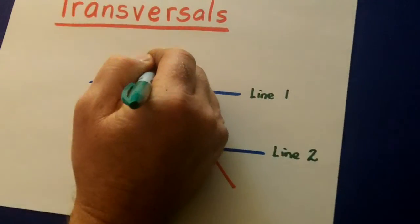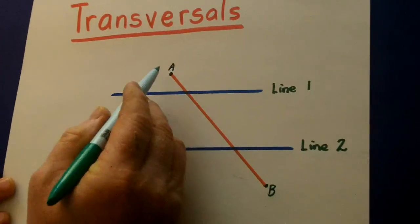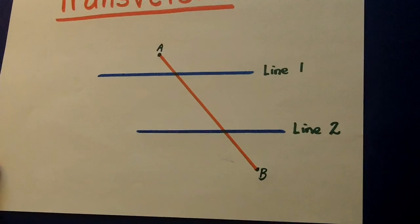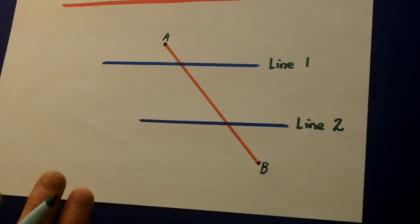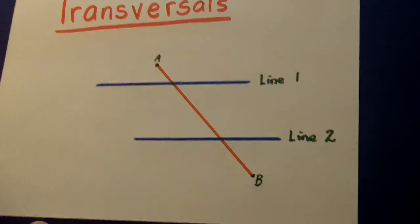If this was point A and point B, the red line is transversal AB. Now, transversals have certain rules.